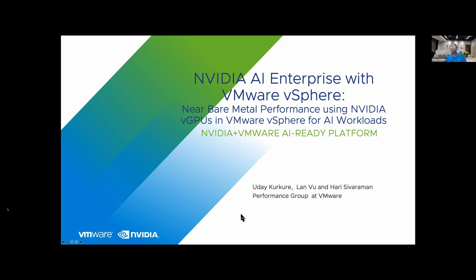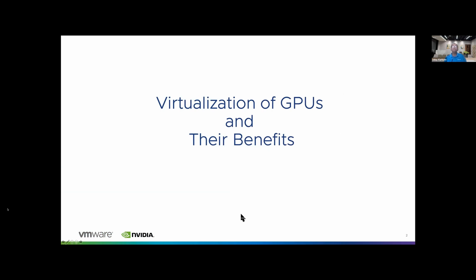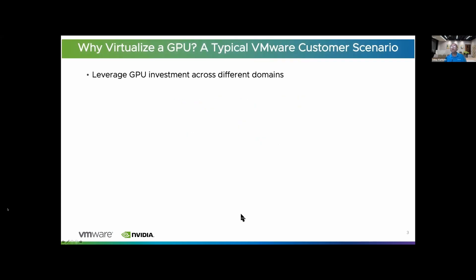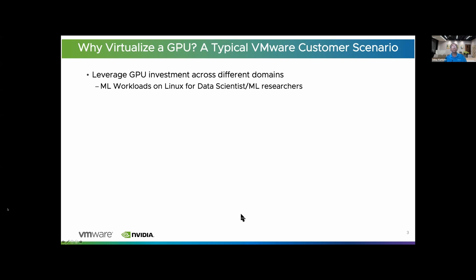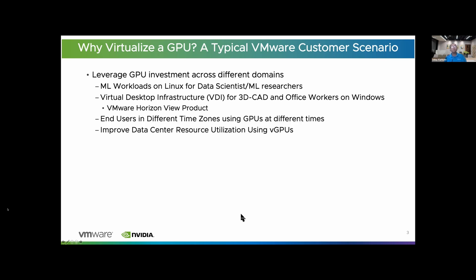And we do get bare metal performance using NVIDIA vGPUs in VMware vSphere. So let's first look at what is virtualization of GPUs and their benefits. Why virtualize a GPU? A typical VMware customer scenario is as follows: they want to leverage GPU investment across different domains. They have ML workloads on Linux for data scientists and ML researchers. They have virtual desktop infrastructure for 3D CAD and office workers on Windows — VMware Horizon View product uses this. Users or employees are in different time zones and using GPUs at different times, so there is a lot of unutilized GPU resources available. You can improve data-center resource utilization using vGPUs. NVIDIA vGPUs in vSphere enable all of the above.